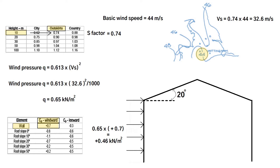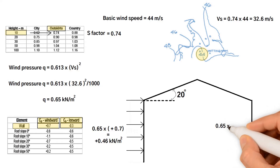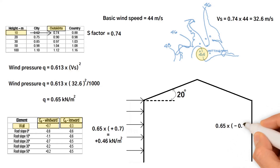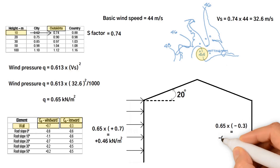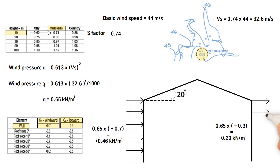Now we need to identify a pressure coefficient from the table on the leeward side. We can see it is negative 0.3. Consequently, the leeward side's load equals wind pressure 0.65 times the pressure coefficient 0.3, giving us negative 0.2 kN/m² wind load on the leeward side. This means the leeward side is subjected to a negative pressure, meaning the wind creates a suction force at the wall.